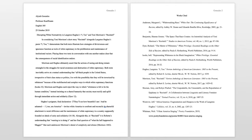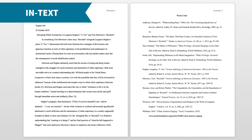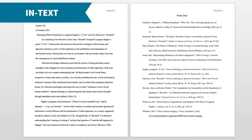There are two main components of a citation. First, when you directly quote or reference another source, include an in-text citation in the body of your paper. In MLA style, this citation typically includes the author's last name and the page number of a direct quote in parentheses.